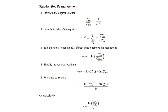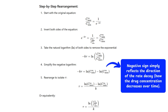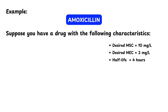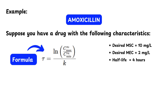If you want to know how the rearrangement happened, here is the step-by-step process. Important note: from one step, the negative sign in the formula vanishes. The negative sign simply reflects the direction of the rate of decay — how drug concentration decreases over time. It is not an absolute value; it just indicates that the drug concentration is declining, so we can remove the minus sign. Now let's calculate the dosing interval. Suppose you have a drug with: desired MSC = 10 mg/L, desired MEC = 2 mg/L, and half-life = 4 hours.